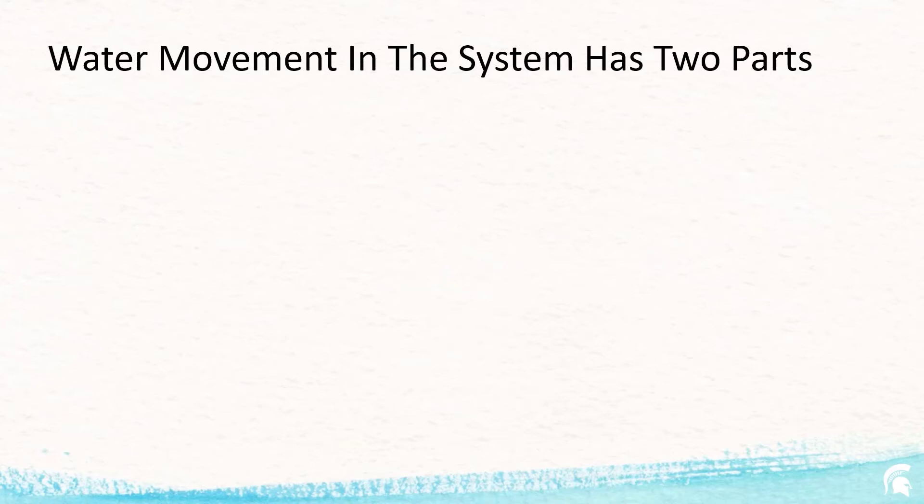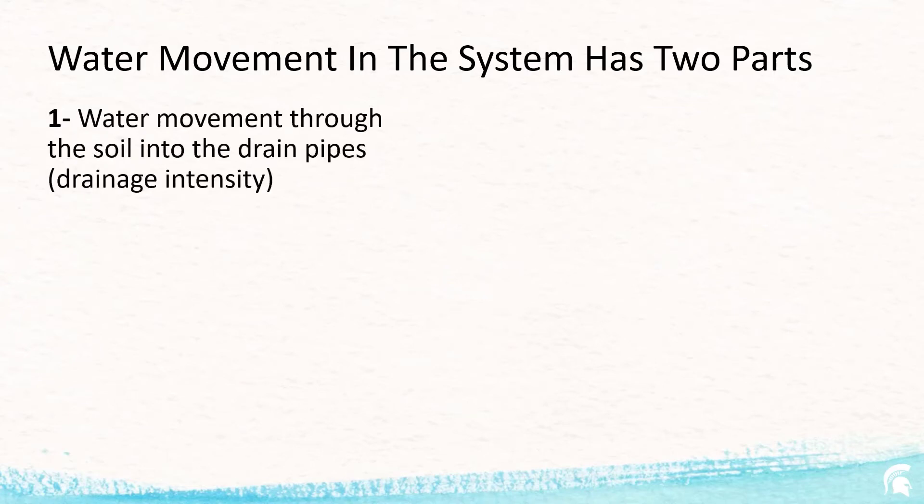Water movement in the drainage system has two parts. The first part is water movement through the soil into the drain pipes. This is known as drainage intensity, in units of inches per day.